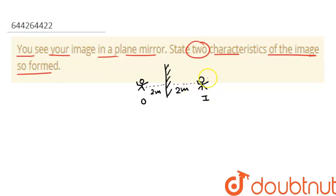Now we'll discuss the characteristics. First of all, the image is erect. This means that the top of the object is shown at the top of the image, and the bottom of the object is shown at the bottom of the image.